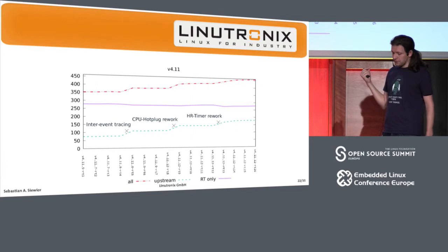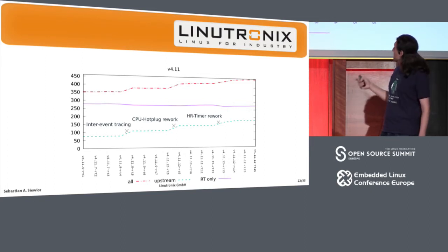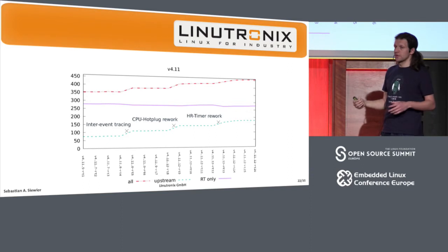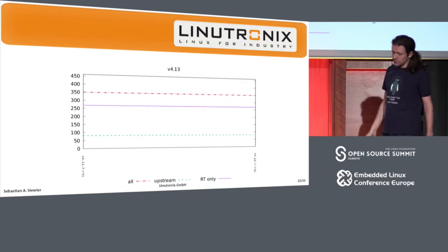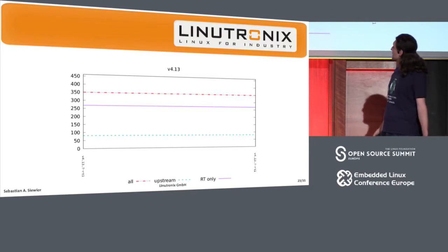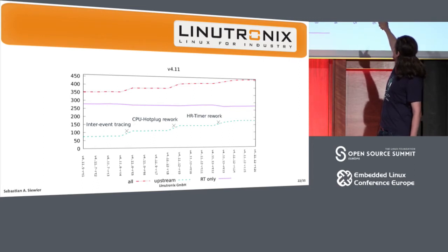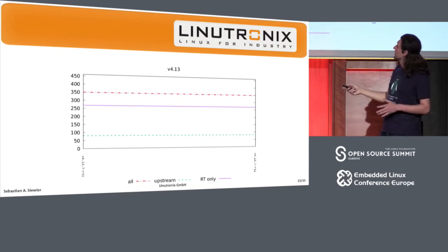At the end of 4.11, we have the HR timer rework. These patches are around the first version, still going upstream, and we aim to get those patches upstream. The blue line is getting down. We are adding more and more patches to the patch set, but more and more are targeted for upstream. For 4.13, which I released last week, it's basically the same version. We have roughly 150 patches targeted upstream, and we went back to less than 100 RT-specific patches — so there is progress.